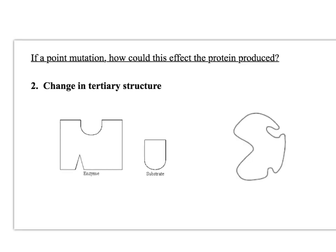If a substitution occurs in DNA and after protein synthesis you end up with the wrong amino acid inserted in the primary structure, and that amino acid was in the active site and was crucial in forming an ionic bond which held the active site in place — if the amino acid changes, that ionic bond will break, the tertiary structure will be different, and the active site will no longer be complementary to the substrate. No more enzyme-substrate complexes can form.